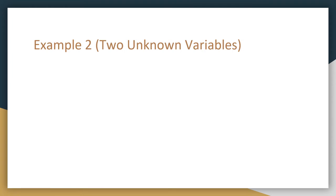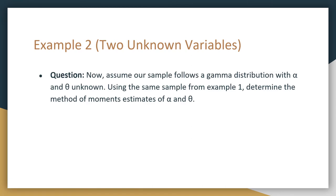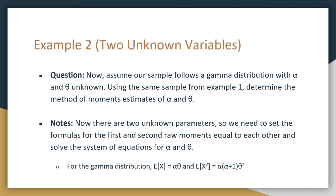Moving on to example two, where we have two unknown variables, we will need to set up two different equations. We now assume our sample follows a gamma distribution with alpha and theta being unknown, using the same sample from the previous example to determine the method of moments estimators for both alpha and theta. Since we have two unknown parameters, we need to set the formulas for the first and second raw moments equal to each other. From the gamma distribution, E[X] equals alpha times theta, and E[X²] equals alpha times (alpha + 1) times theta squared.